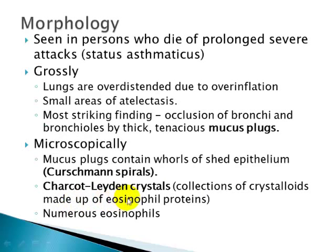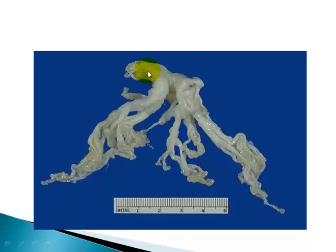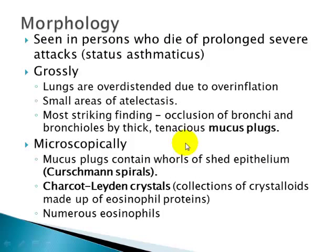Morphologically, these changes are difficult to see except in those who have died from prolonged severe attacks, such as in status asthmaticus. Grossly, the lungs will be over-distended and over-inflated due to air entrapment, which may even lead to atelectasis. The most striking finding is occlusion of the bronchi and bronchioles by thick, tenacious mucus plugs that take the shape of the entire bronchial tree.